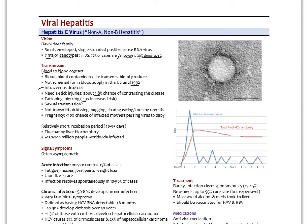Sexual transmission, we're not sure. We don't think there's a dramatic uptick of risk like we see with hepatitis B, but I put a question mark there. Not transmitted through kissing, hugging, sharing eating or cooking utensils. In pregnancy, there's less than 10% chance of an infected mother passing the virus to the baby. Relatively short incubation period, just over a month, month and a half.